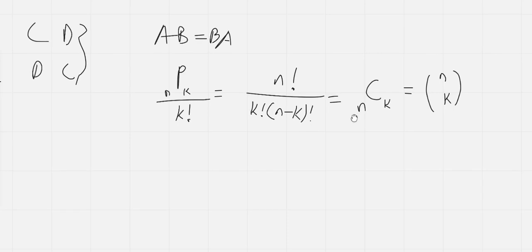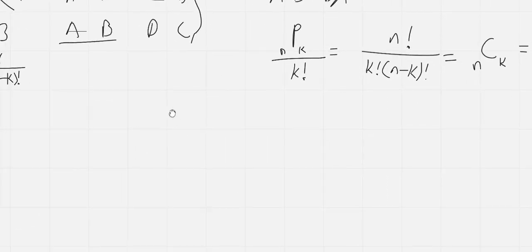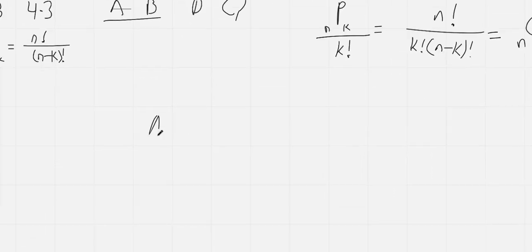So now let's say we wanted to rearrange the objects A, B, and B. Now our first guess would be to say that this is, there's three objects, so it's three factorial, and it equals six. However, if we count it ourselves, there's A, B, B, or we could have B, A, B.